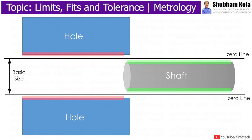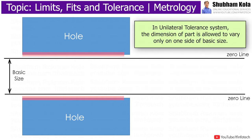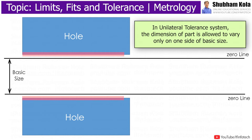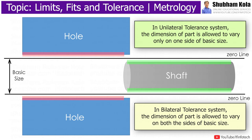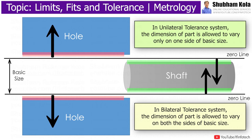In the unilateral tolerance system, the dimension of a part is allowed to vary only on one side of basic size, whereas in the bilateral tolerance system, the dimension of a part is allowed to vary on both sides of basic size, i.e., the limits of tolerance lie on either side of basic size.